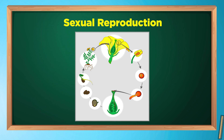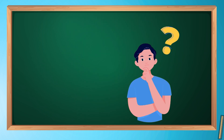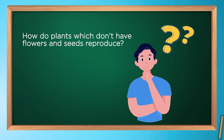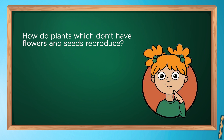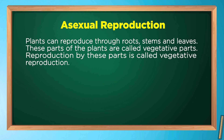The life cycle of a plant continues in this way. Now the question is: how do plants which do not have flowers and seeds reproduce? There are other ways by which plants reproduce that do not involve the male and female cells. In some plants, roots, stems, and leaves are used for reproduction. These parts are called vegetative parts.